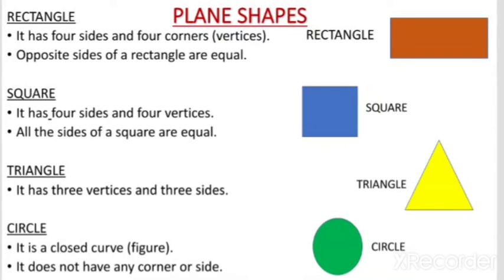The second shape is a square. A square is a closed figure. It has 4 sides and 4 vertices, and all the sides of a square are equal.